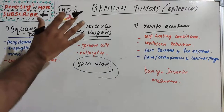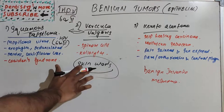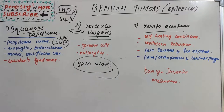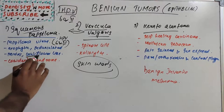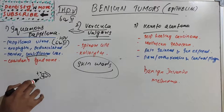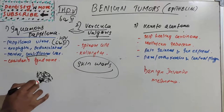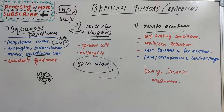Squamous papilloma and verruca vulgaris are clinically and microscopically almost the same. The growth is exophytic, pedunculated, and painless, made up of numerous small finger-like projections resulting in a roughened, verrucous, or cauliflower surface. Intraorally, it is most commonly found on the tongue, lips, buccal mucosa, gingiva, palate, and the area adjacent to the uvula.